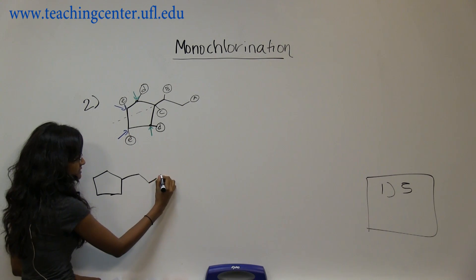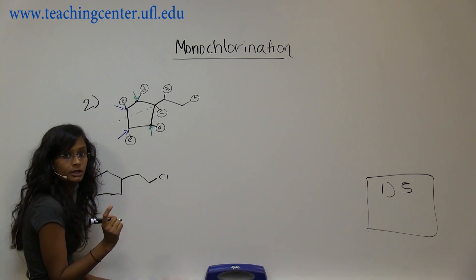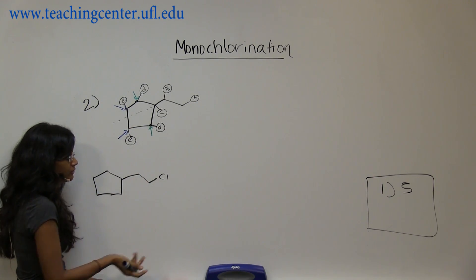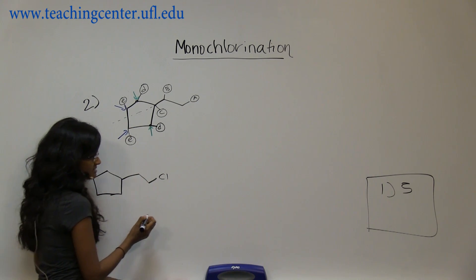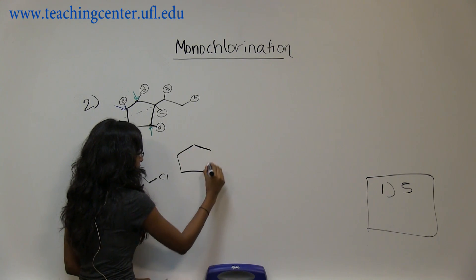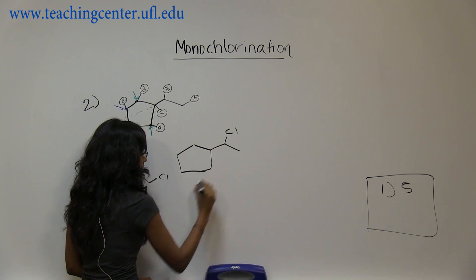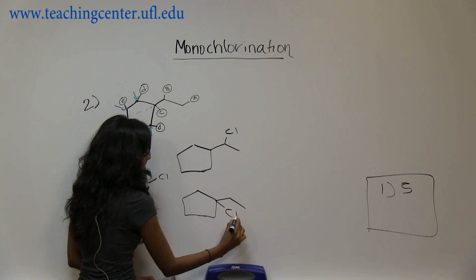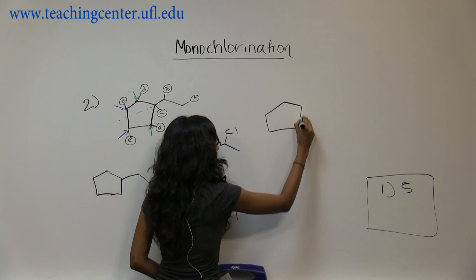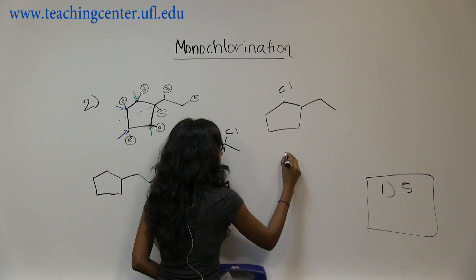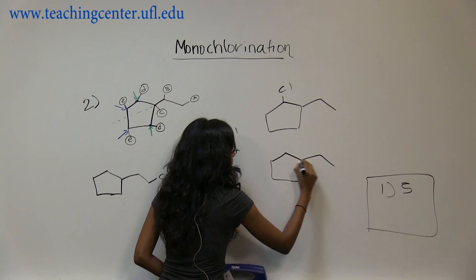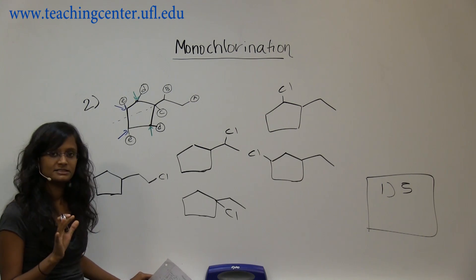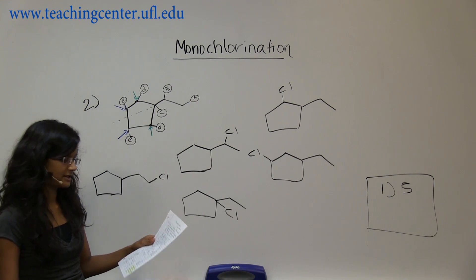Simply, what you're doing is replacing the hydrogen with chlorine. Make sure you don't miss a carbon — that's why I have these hydrogens drawn, so you don't miss a carbon by mistake. These are the five distinct products without any stereoisomers.